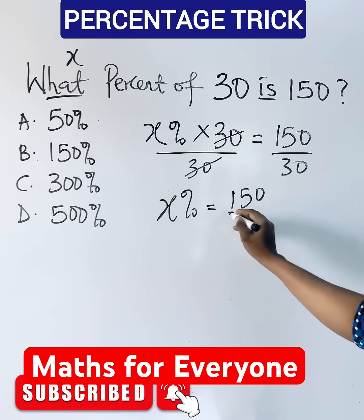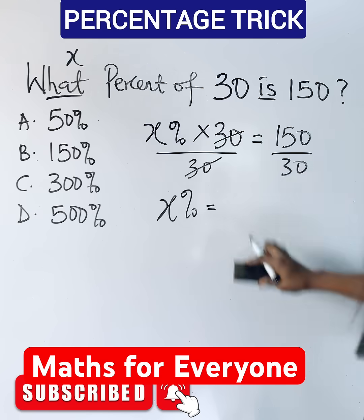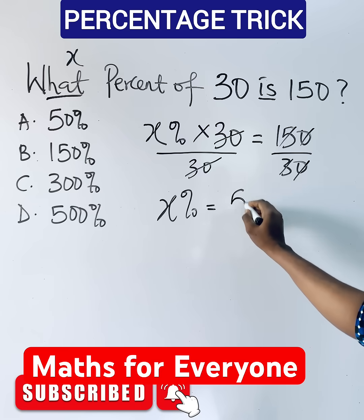divided by 30, and when you divide it, what does it give us? This takes off, this goes, we have five.